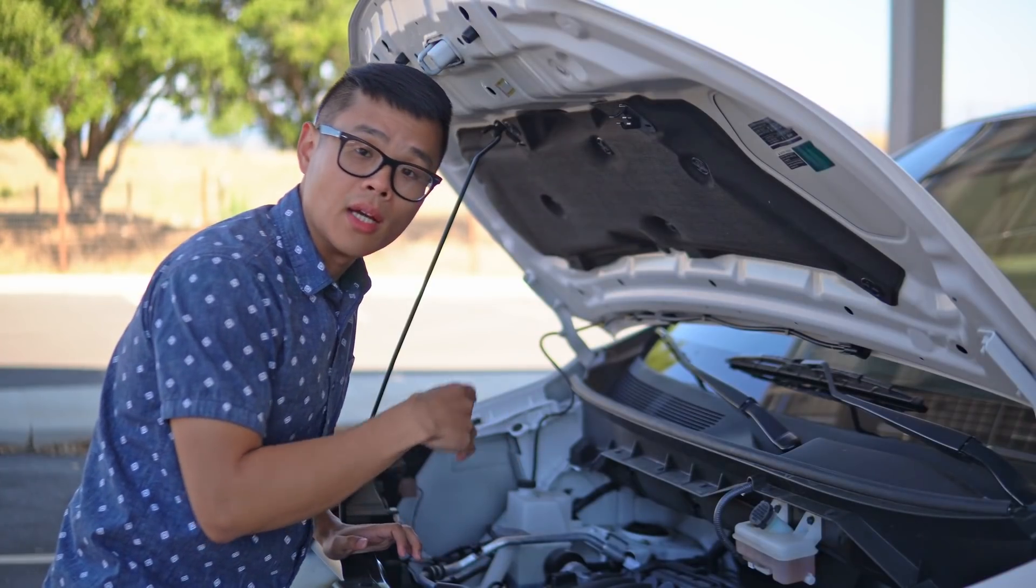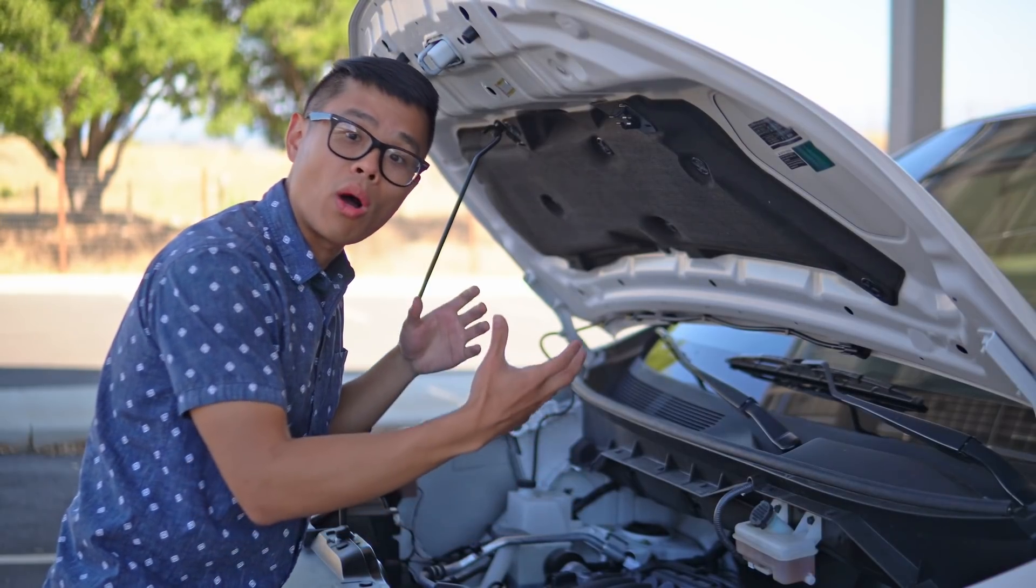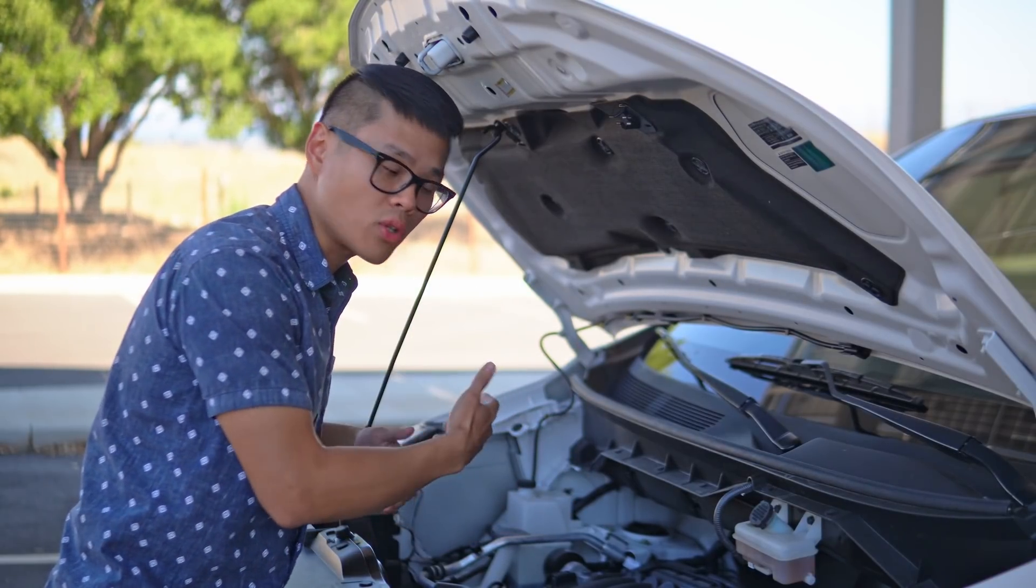An alternator is kind of like an electric motor, but in reverse. A direct current motor takes electricity and generates mechanical motion, while an alternator takes mechanical motion to generate electricity.